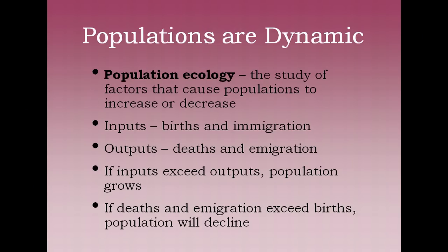The factors that cause populations to increase or decrease is called population ecology. When you're calculating the change in population, you're looking at the inputs, which are births and immigration, and outputs, which are deaths and emigration. So if inputs exceed outputs — if there are more births and immigration than deaths and emigration — your population will grow.